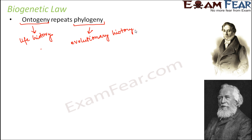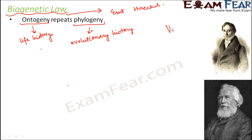The name 'biogenetic law' was given by Ernst Haeckel. However, this law was originally given by another scientist named Von Baer, and after his name it was called Baer's law. Later, Baer's law was renamed as the biogenetic law by Ernst Haeckel.